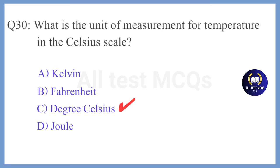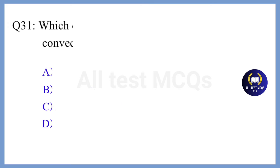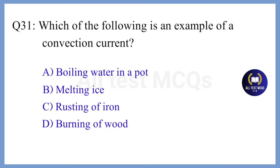Question 31. Which of the following is an example of a convection current? The correct answer is Option A. Boiling water in a pot.